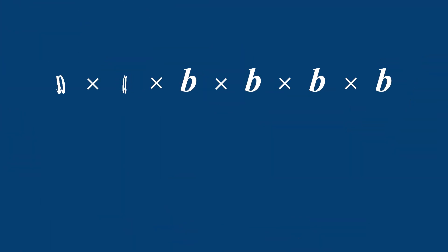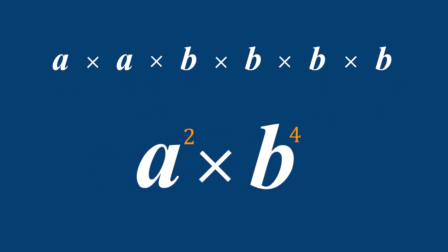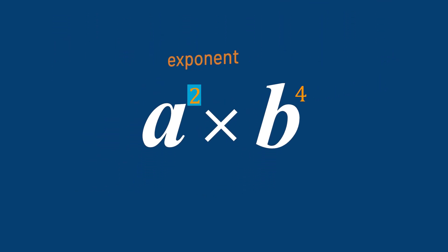Here we have a multiplied by itself two times and b multiplied by itself four times. That means a is the base with exponent two and b is the base with exponent four. We know that two is the exponent of the base a and that a with exponent two is called a power.